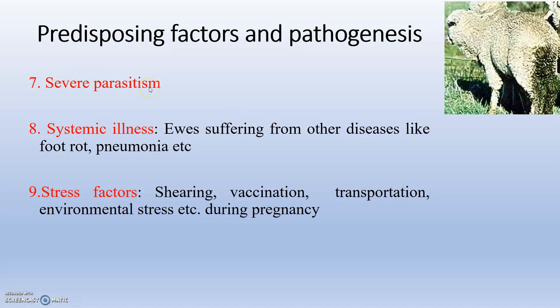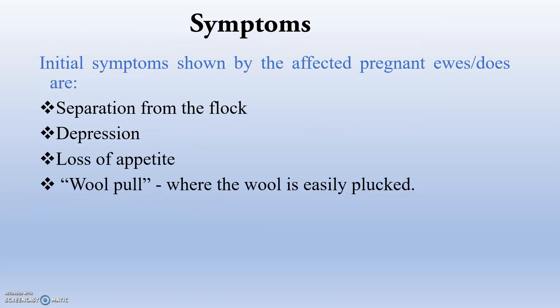Severe parasitism leads to anemia, causing gestational difficulties. Systemic illness — such as foot rot or pneumonia — results in bacterial toxins in the blood, leading to toxemia. Stress factors including shearing, vaccination, transportation, and mental stress during pregnancy are also important predisposing conditions.